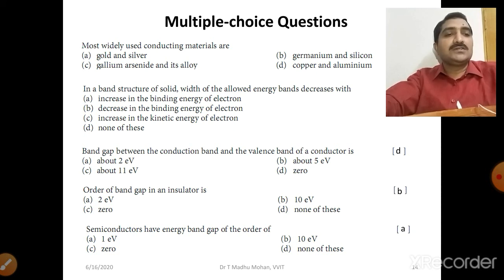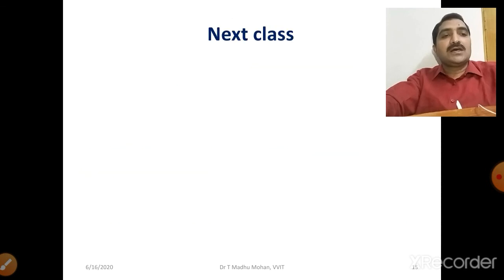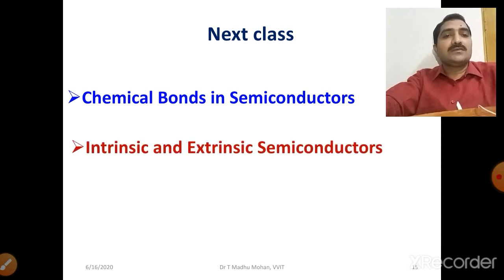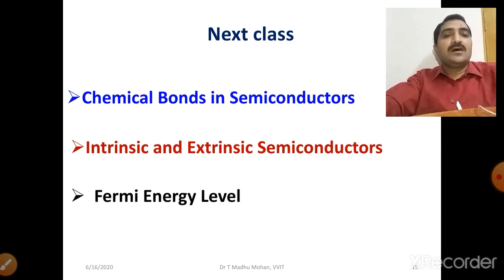In the next class, we will discuss chemical bonds in semiconductors — how bond formation takes place — and types of semiconductors, namely intrinsic and extrinsic semiconductors, as well as the Fermi energy level.